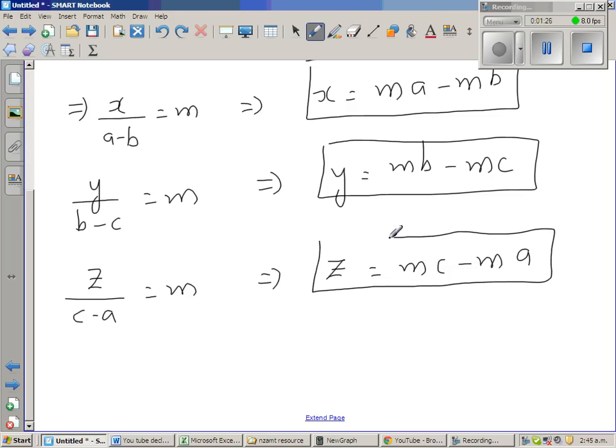So we want to prove x plus y plus z is equal to 0. Therefore I can say x plus y plus z is equal to m a minus m b.